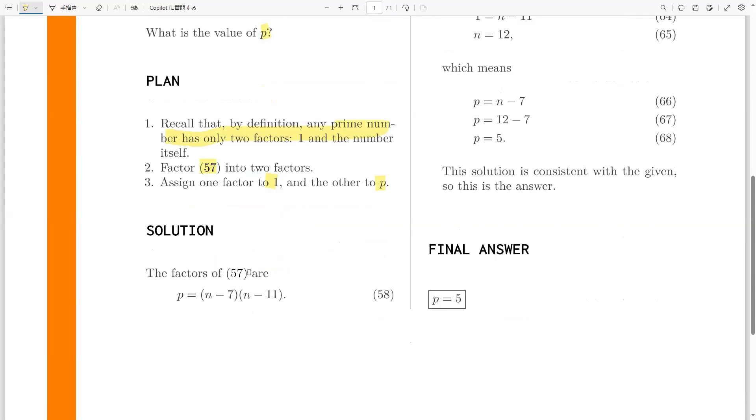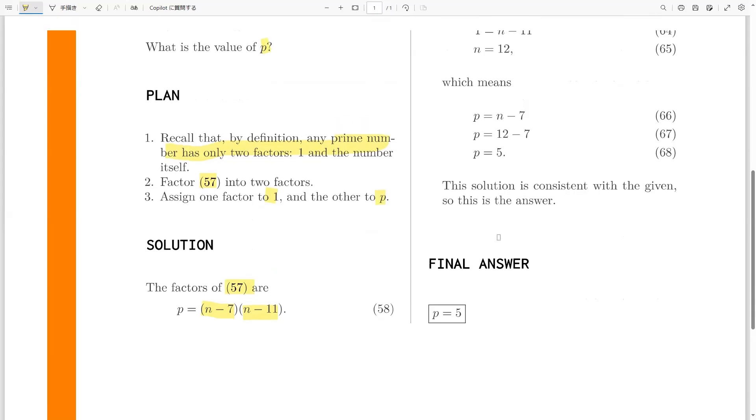The factors of 57, equation 57, are n minus 7 and n minus 11. So you can try to figure out that yourself. And now, if you're convinced with that, we can go to the next step.